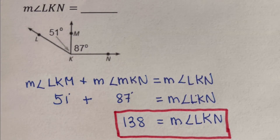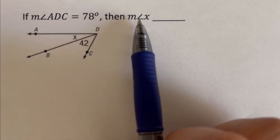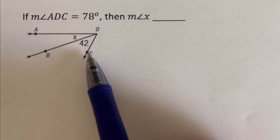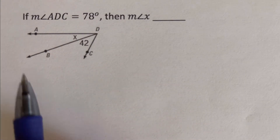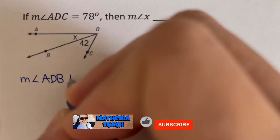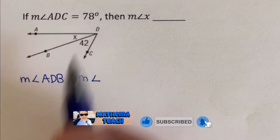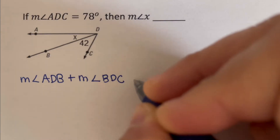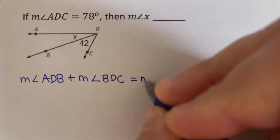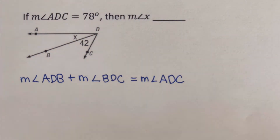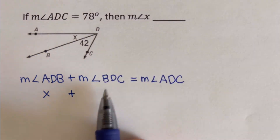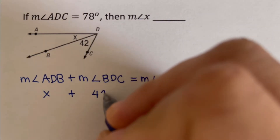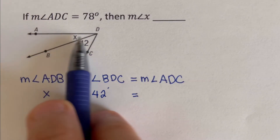Now let's move on to the next example. Here we're supposed to solve for angle X. We are given that angle ADC equals 78 degrees — that's the whole thing. Using the angle addition postulate, we write: the measure of angle ADB plus the measure of angle BDC equals the measure of angle ADC. So ADB is X, plus BDC is 42 degrees, equals 78.